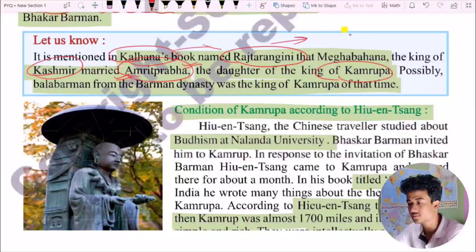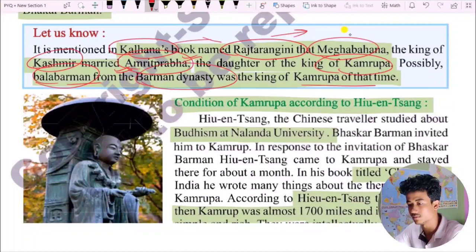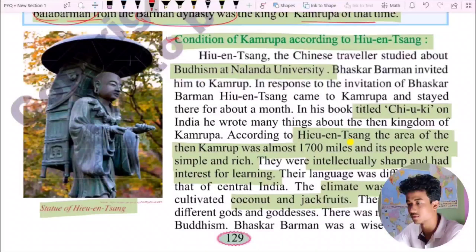Possibly Balavarman from the Varman dynasty was the king of Kamarupa at that time. Xuanzang, the Chinese traveler, came to study Buddhism at Nalanda University. Bhaskar Varman invited him to Kamarupa, and Xuanzang came to Kamarupa in response to the invitation and stayed there for a month.